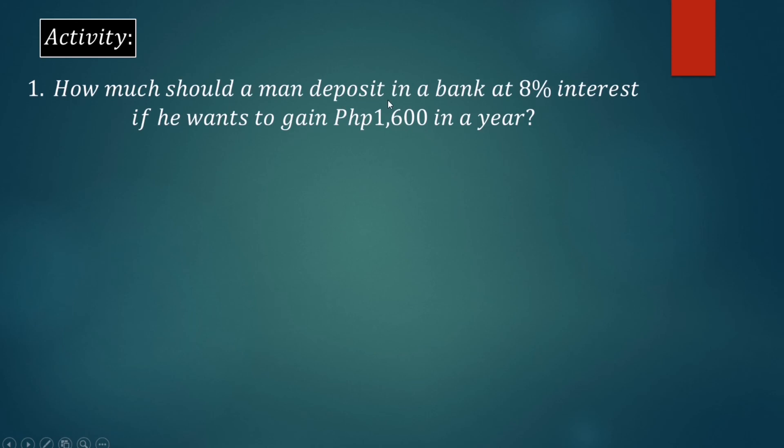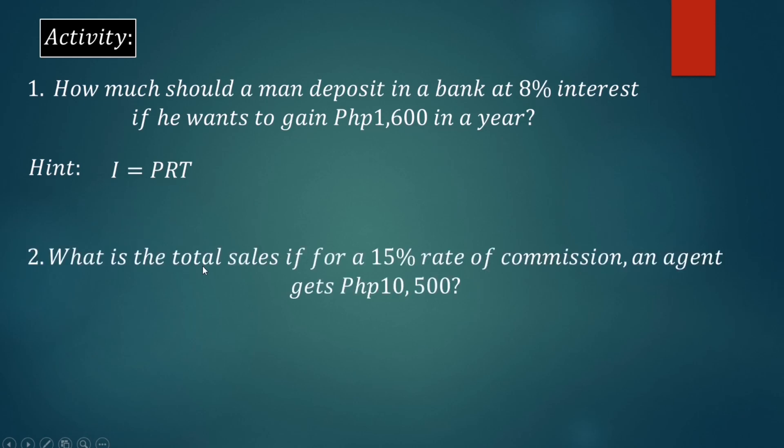For your activity: Number one, how much should a man deposit in a bank at 8% interest if he wants to gain 1,600 pesos in a year? Hint: you can use the simple interest formula I = PRT to find the principal. Number two: What's the total sales if for a 15% rate of commission an agent gets 10,500 pesos? You may share your answers in the comment sections below.